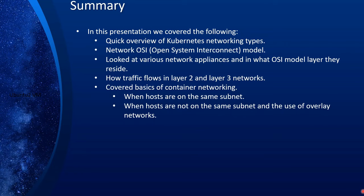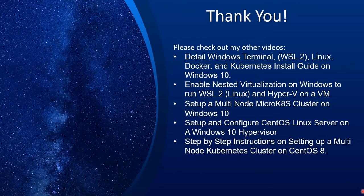In this presentation we covered the following: an overview of Kubernetes network types, the network OSI model, various network appliances such as switches and routers and what OSI layer they reside in, how traffic flows in layer 2 and layer 3 networks, and basics of container networking — both when hosts are on the same subnet and when they're not, and how we leverage overlay networks. Thank you very much for your patience and for viewing this video. I have other presentations listed here, hope to see you soon, thank you.